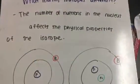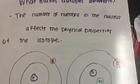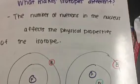What makes isotopes differ? What makes them differ is the number of neutrons in the nucleus affects the physical properties of each of the isotopes.